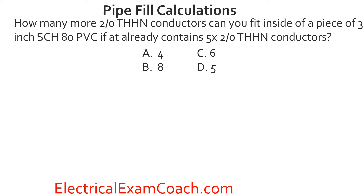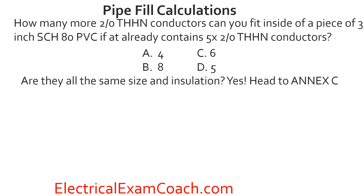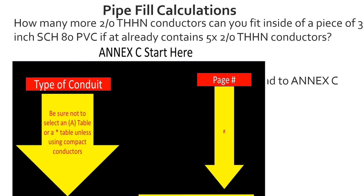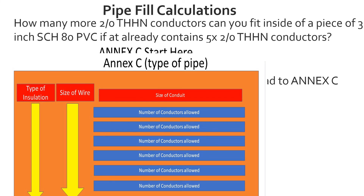Practice problem: How many more 2/0 THHN conductors can you fit inside a piece of 3-inch schedule 80 PVC that already contains five 2/0 THHN conductors? Are they all the same size and insulation? Yes. Head to Annex C, find schedule 80 PVC — not the A version — go to the page number, read the black bold heading, find THHN insulation, find 2/0 wire size, come across the top to 3-inch conduit, and tee off. The table shows 11 total. Minus the 5 already there, we can fit 6 more.